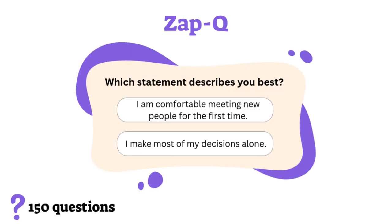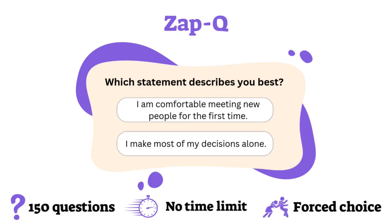The fifth and last test is ZAP-Q, a personality profiling questionnaire measuring 24 different traits through 150 questions. This section is untimed. The main challenge here is the fact that you have to choose between two statements, even if you agree or disagree with both. This is a common technique in personality profiling tests known as forced choice, which allows the test to rank your traits but also prevents you from trying to game the system through dishonest answers.